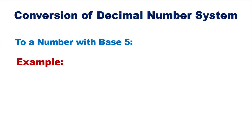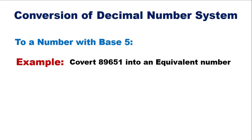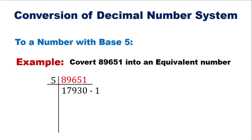इसके लिए हमें एक question दिया गया है. इस number को 5 से divide करने पर हमें quotient हासल होगा और remainder हमें 1 हासल होगा.